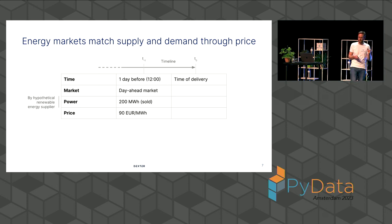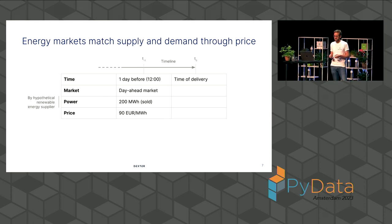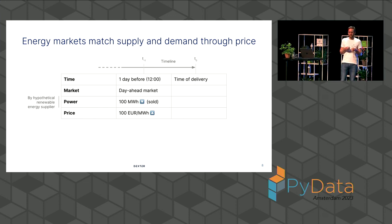So here you see the day ahead market, at T-1. Say that our hypothetical renewable energy supplier sold a volume of 200 megawatt-hours for a certain point in the next day. And this price that the supplier gets for that is 90 euros. If they would sell a bit less, so instead of 200 we go to 100, then the supply decreases, then the price increases. So the good becomes more scarce, the price increases. And this is basically the idea that the energy market tries to match supply and demand, mediated by the price. So dynamically setting the price to match supply and demand.